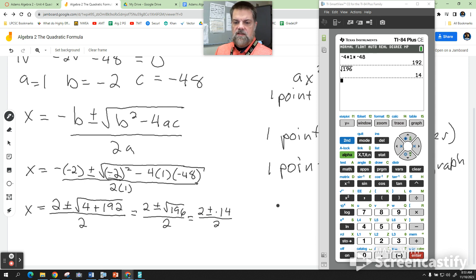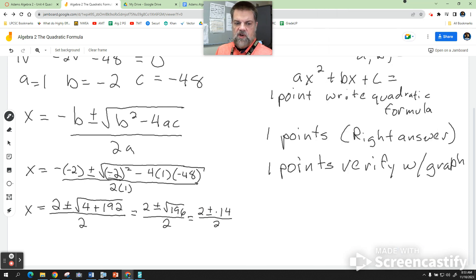Now from there, I've got to split this apart. So x can equal 2 plus 14 divided by 2, or x can equal 2 minus 14 all over 2. What's 2 plus 14? 16 divided by 2, which is a positive 8. Then I'm going to do the other solution: 2 minus 14 is negative 12, all over 2.